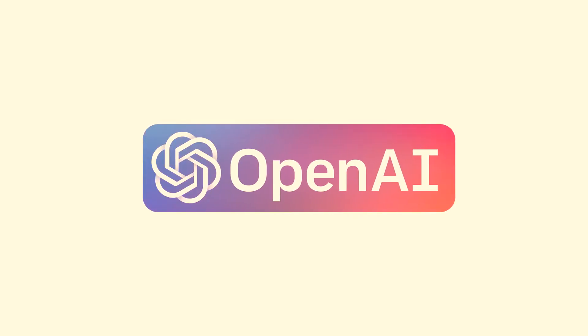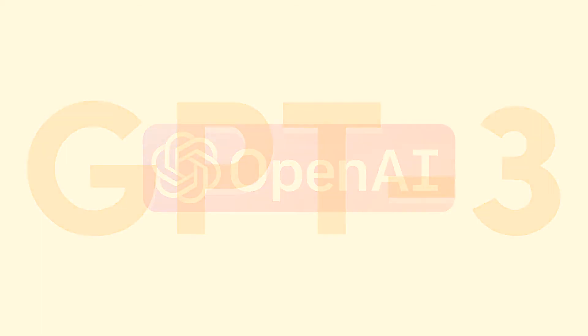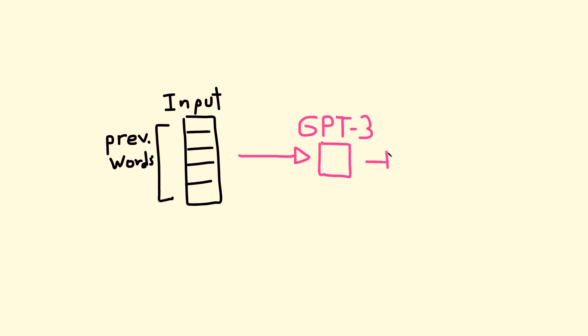You saw a video online about GPT-3, you were absolutely scared and now you want to know how it works. You've come to the right place. What GPT-3 tries to do is very simple: given a set of words, it tries to predict the next word. That is essentially all it does.